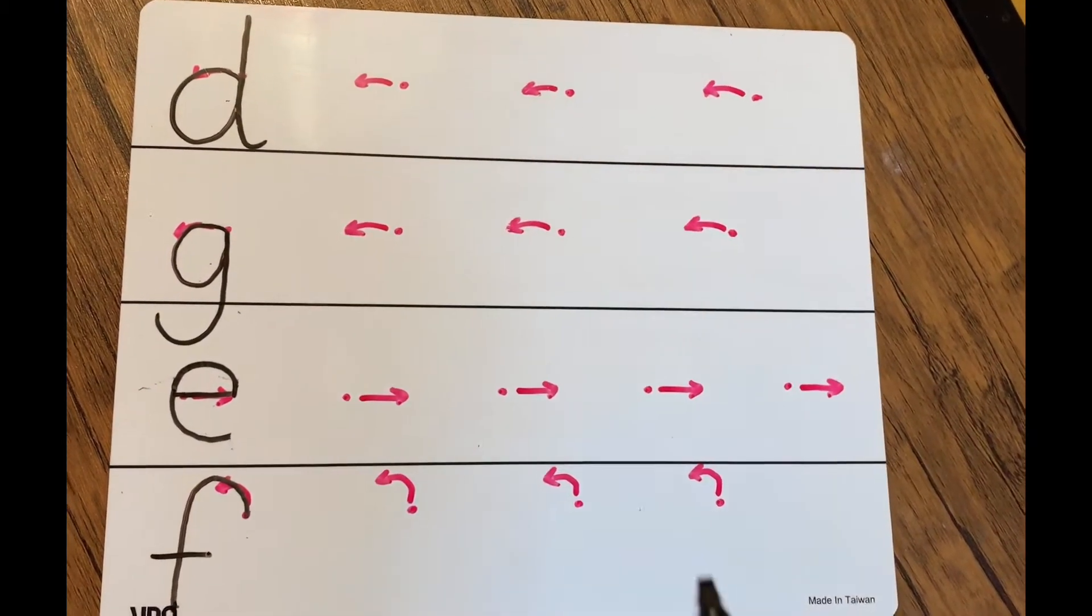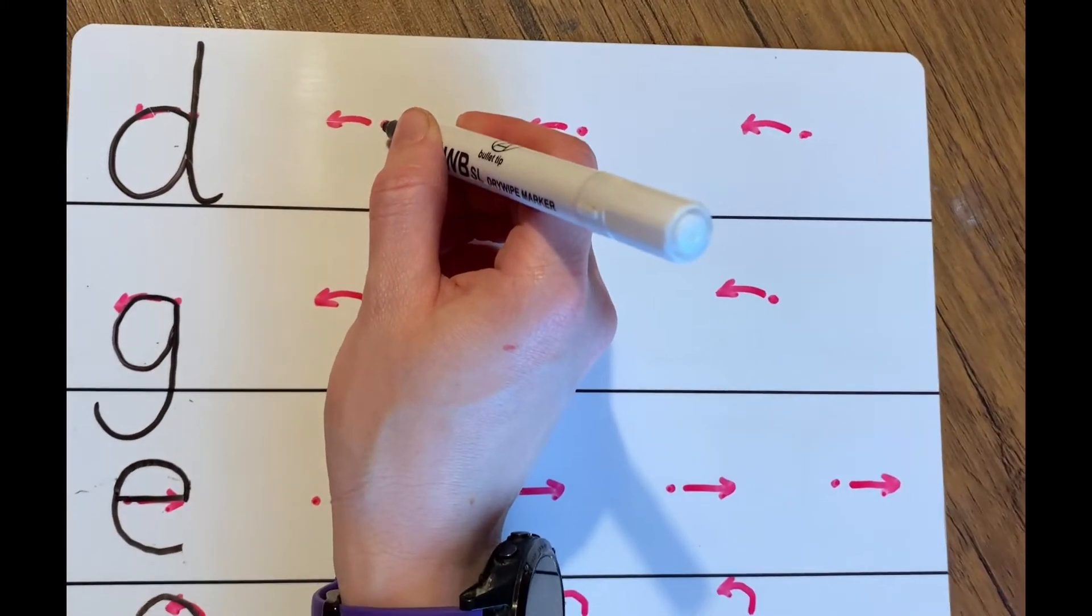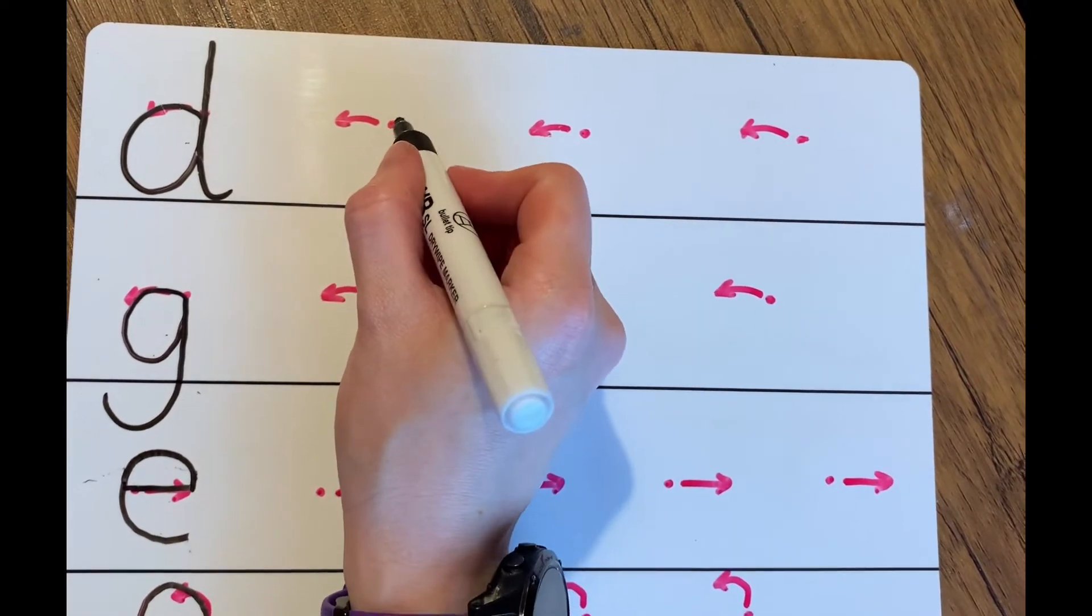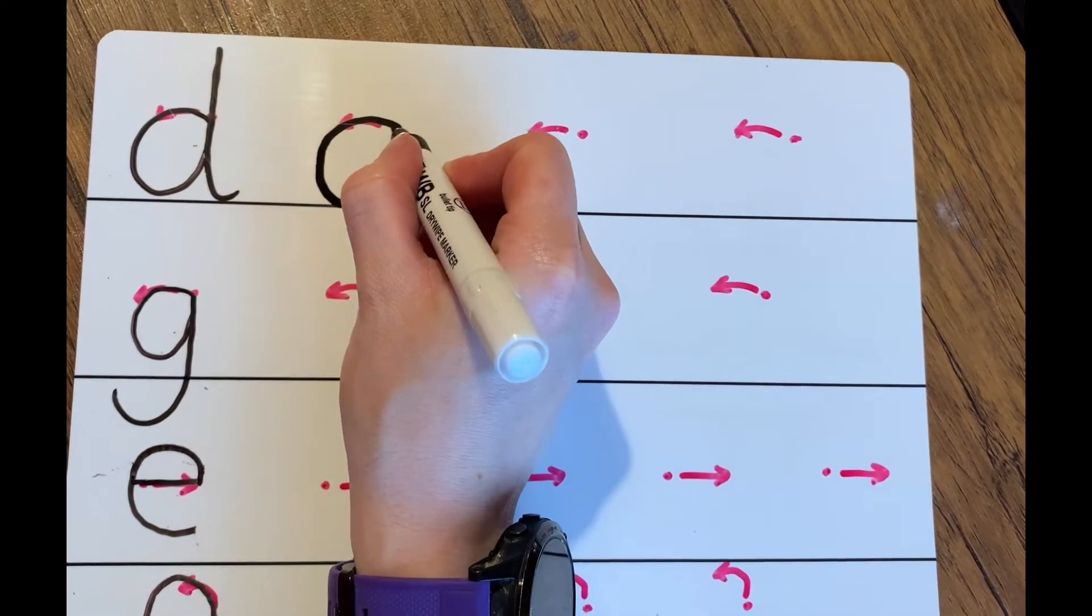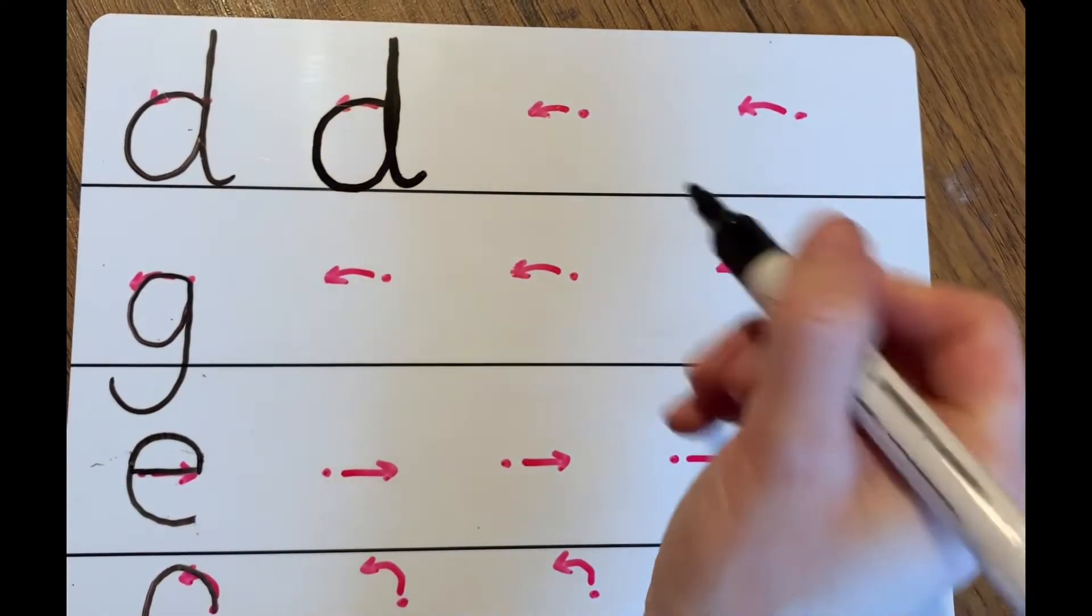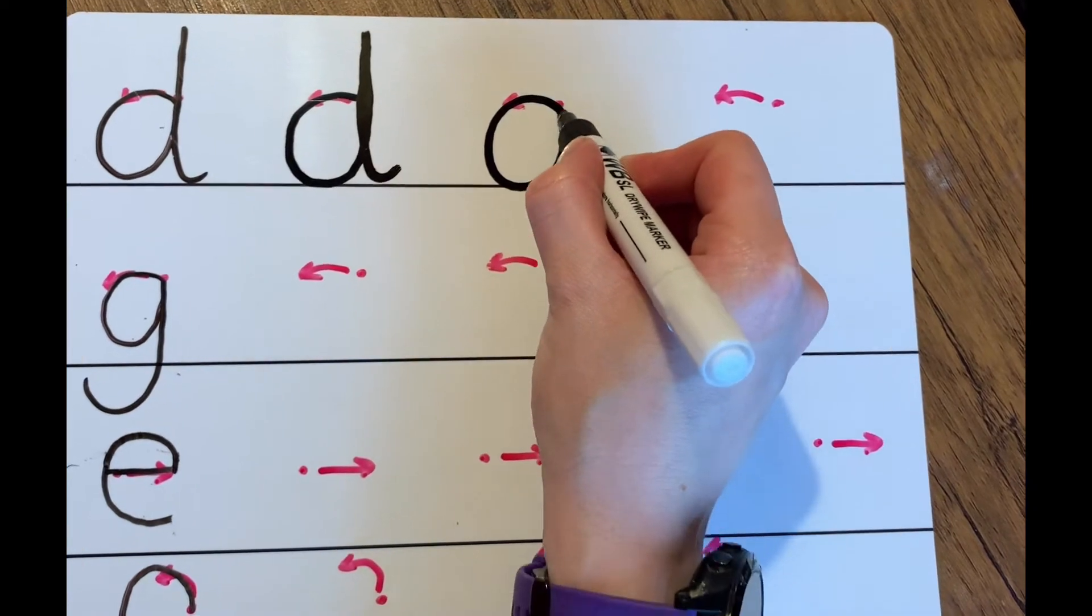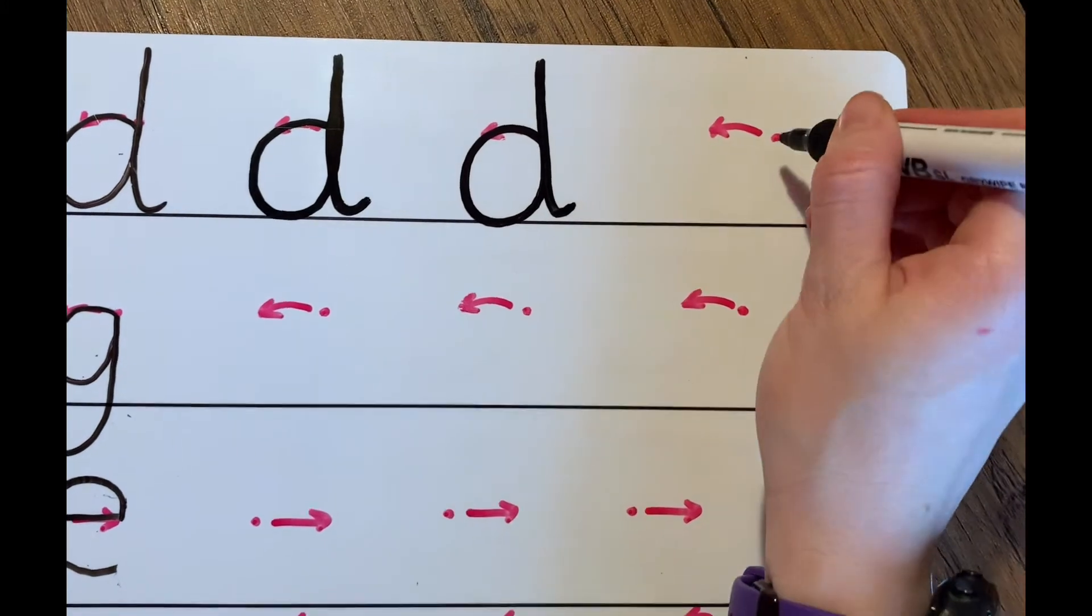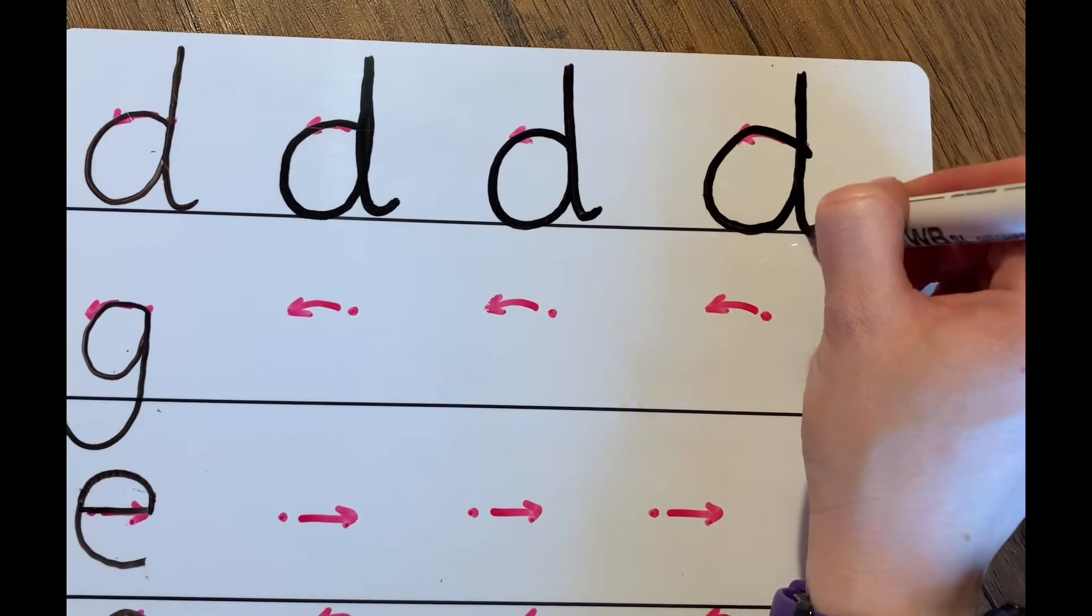So with our d, we start on the red dot and we follow the arrow round. To write it, we go around the dinosaur's bottom all the way up his tall neck and down his tail. Starting on the red dot, around the dinosaur's bottom, all the way up his tall neck and down his tail. And again, around the dinosaur's bottom, all the way up his tall back and down his tail.